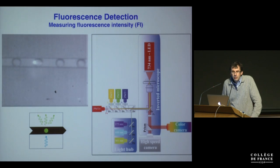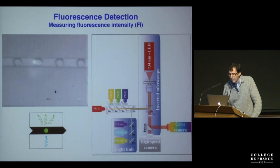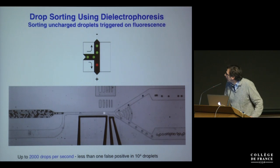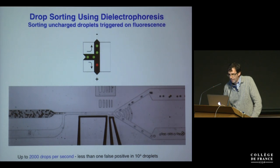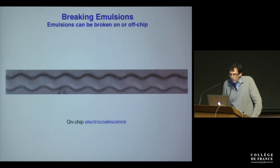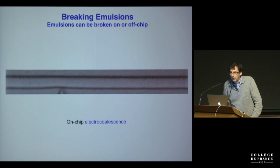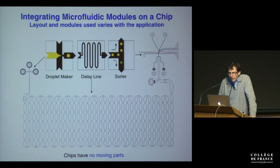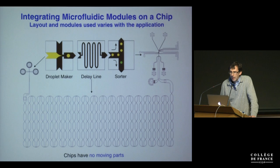We can measure the fluorescence in drops — multiple colors at the same time — it's a bit like a flow cytometer. We can sort the droplets triggered on fluorescence at up to about 2,000 droplets per second using dielectrophoresis. Once we've collected droplets, we can then break the emulsion by electrocoalescence and recover the contents to do other assays.